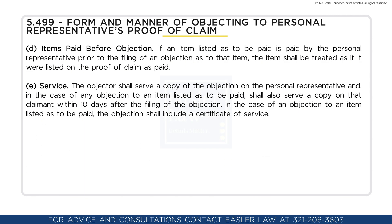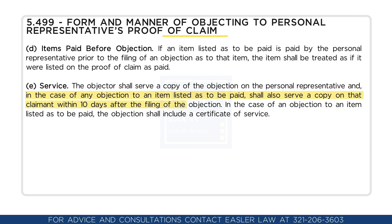Items paid before objection: If an item listed as to be paid is paid by the personal representative prior to the filing of an objection as to that item, the item shall be treated as if it were listed on the proof of claim as paid. The objector shall serve a copy of the objection on the personal representative, and in the case of any objection to an item listed as to be paid, shall also serve a copy on that claimant within 10 days after the filing of an objection. In the case of any objection to an item listed as to be paid, the objection shall include a certificate of service.